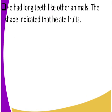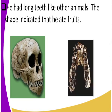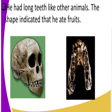Another feature of Diopithecus africanus is that it had long teeth like other animals, and the shape of the teeth indicated that it ate fruits. Get to look at the teeth of the Diopithecus africanus — they are like those of other animals, and this showed that it ate fruits. Now if you get to compare those teeth with the teeth of modern man, we can closely see that the teeth of Diopithecus africanus and other animals are closely related.